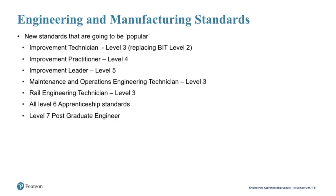The Level 6 apprenticeship standards all have a degree as a mandatory requirement. However, routes to the degree can be determined by the employer — apprentices completing an HNC, HND, or foundation degree and then topping up to a full bachelor's degree is accepted, as well as direct entrants to a full degree programme. Level 7 programmes are being viewed by many large employers as a replacement for their current graduate entry programmes.